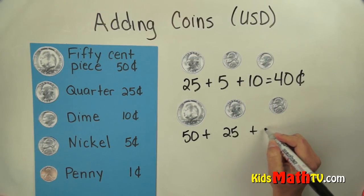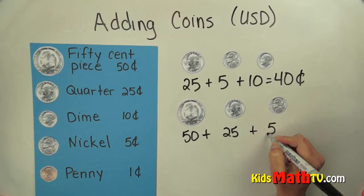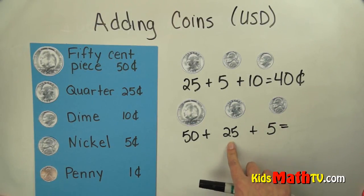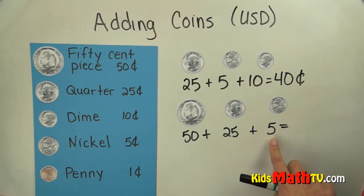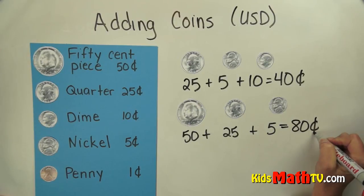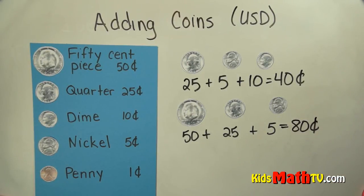And then I can add 5 more cents. So 50 plus 25 is 75, and 75 plus 5 is 80 cents. And that's how we can add coins in US dollars.